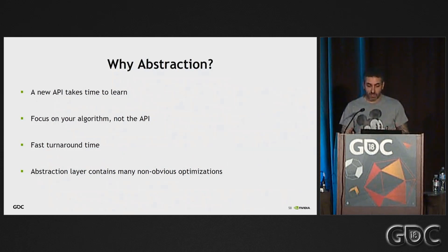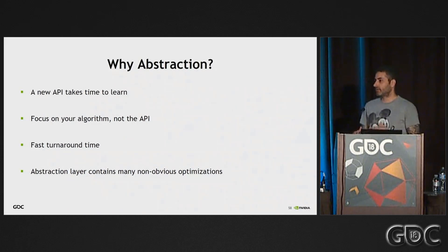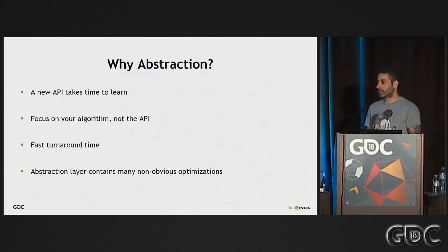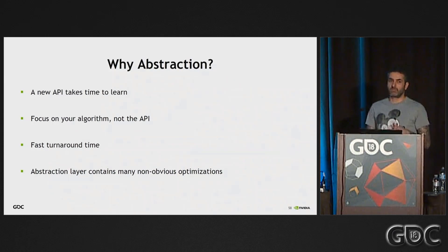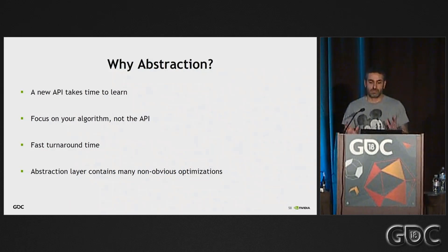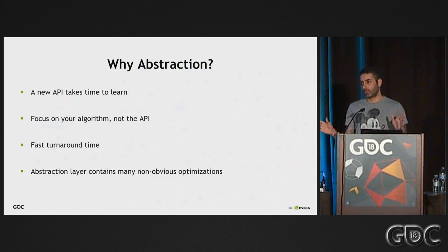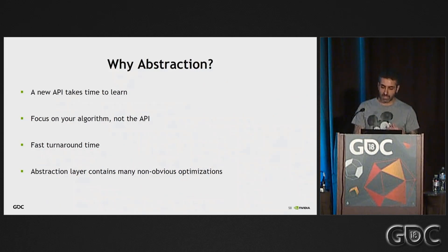We have some concrete examples. When we worked on DXR in the research team, we had five different applications and at some point realized something was running slow. Instead of going and optimizing five different applications, we just optimized Falkor once, everyone updated to the new library, and they all got the optimization — it sped up their samples automatically.